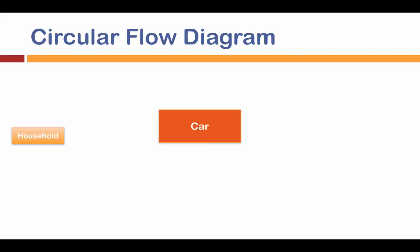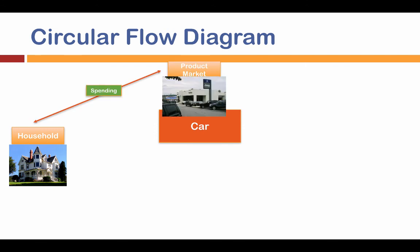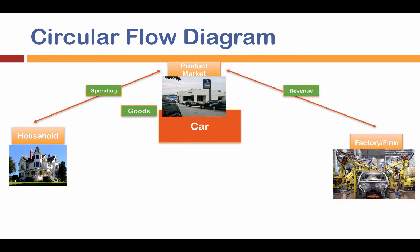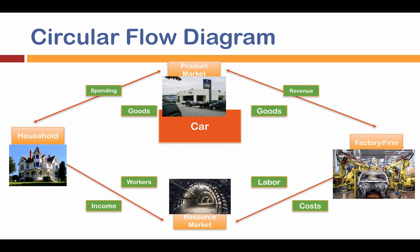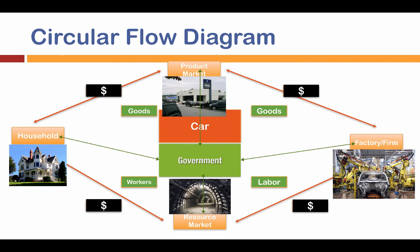When we look at the circular flow diagram — using a car as an example — the household goes to the product market, which is the car dealership, spends money, and gets a car. The car dealership provides revenue to the factory firm like Ford or Jeep, and in exchange gets trucks, cars, or SUVs. The factory goes to the resource market, pays workers money, and gets labor and resources to make those cars. I go to work every day to earn income — that's the resource market. But since we have a mixed economy, the government is also taxing us at the household, product market, factory, and resource market.